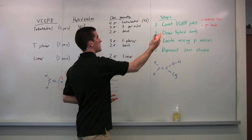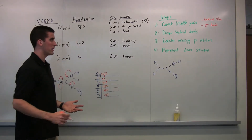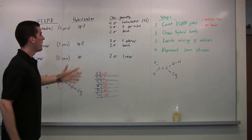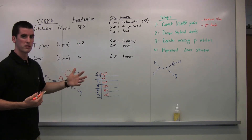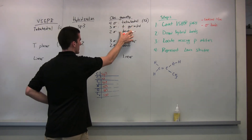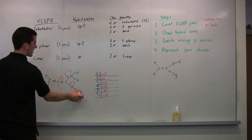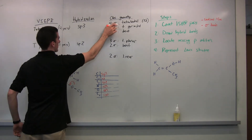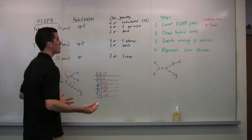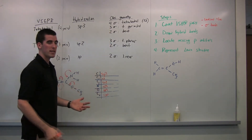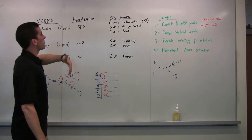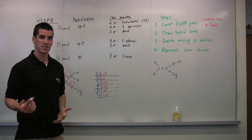Just for review: VSEPR pairs are either sigma bonds or localized non-binding electrons. Now in this table, we have the observable geometry. Non-binding electrons can influence the observable geometry depending on how many sigma bonds you have. For example, if a carbon is SP3 with four sigma bonds, its observable geometry is tetrahedral. If there were a non-binding electron, it would reduce the sigma bonds to three, making it trigonal pyramidal. This table is very important — the observable geometry changes based on how many sigma bonds there are.